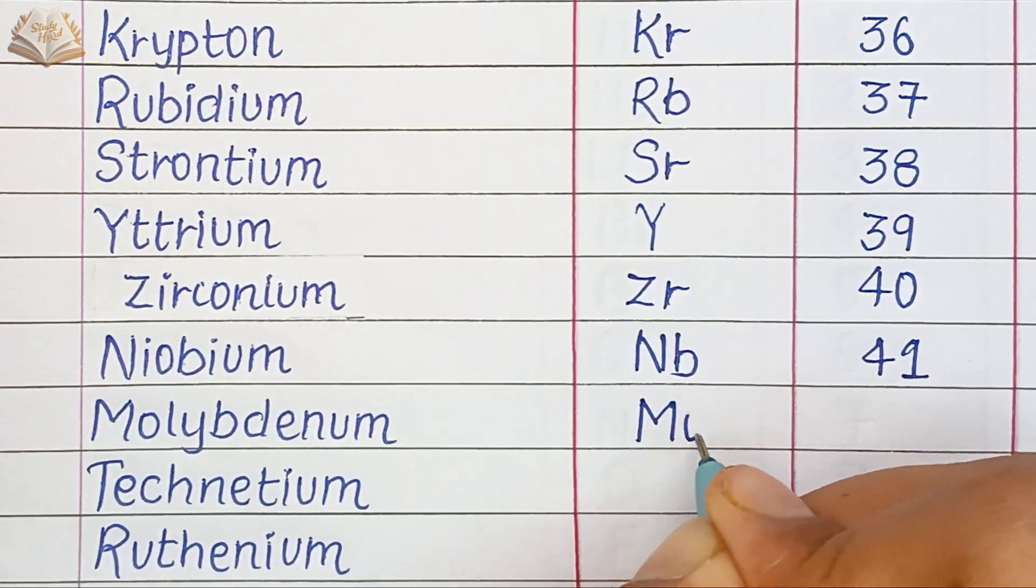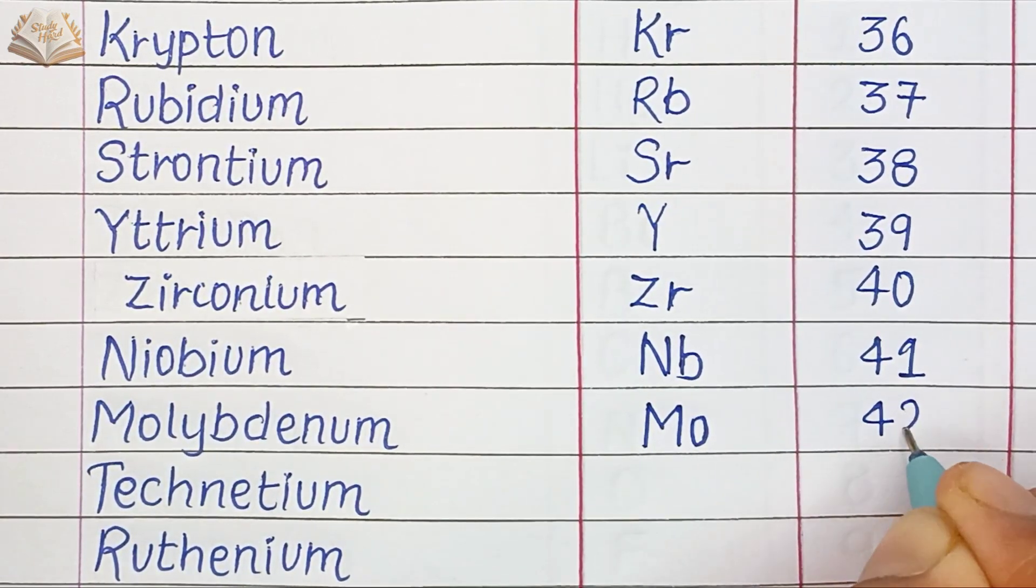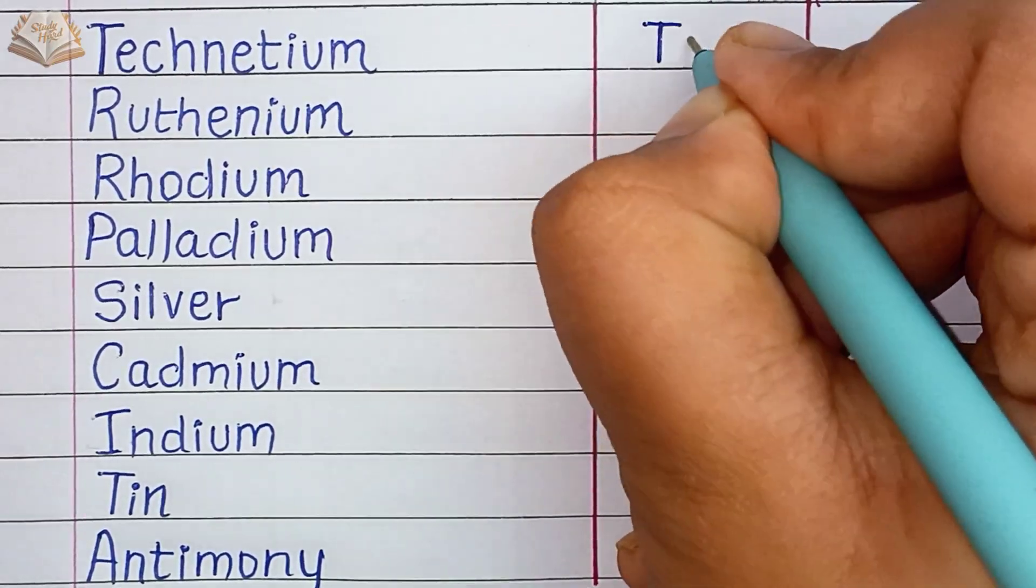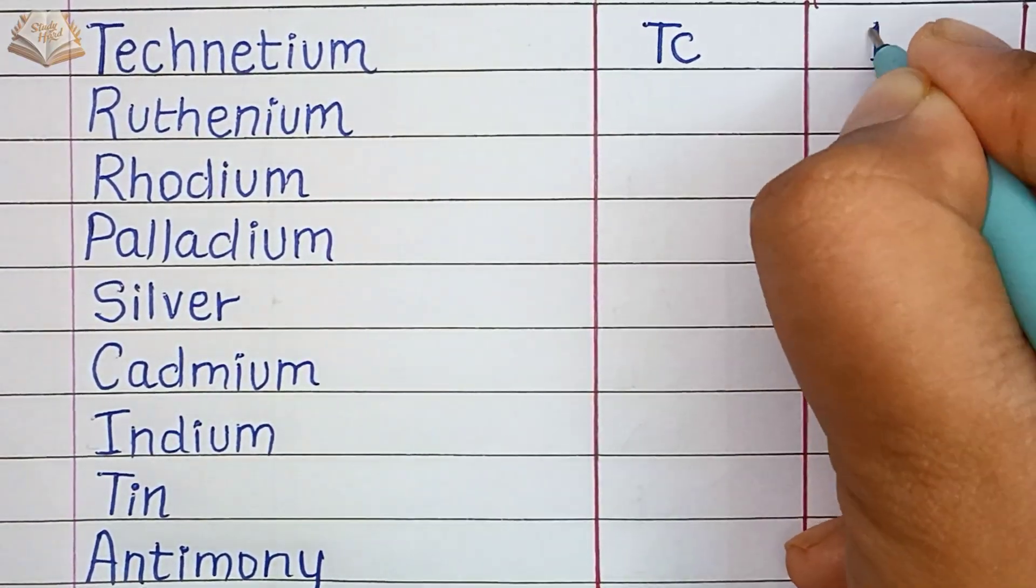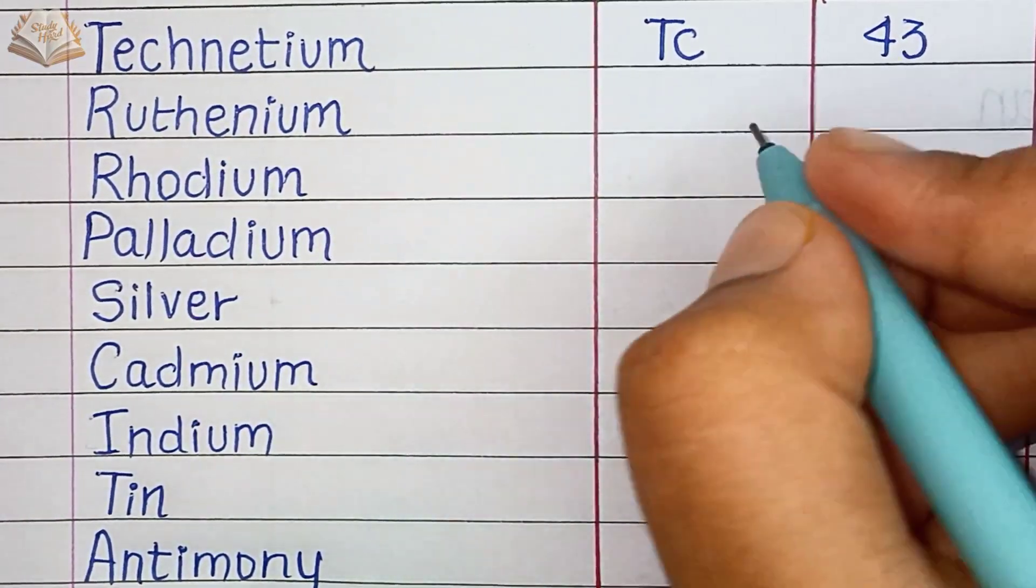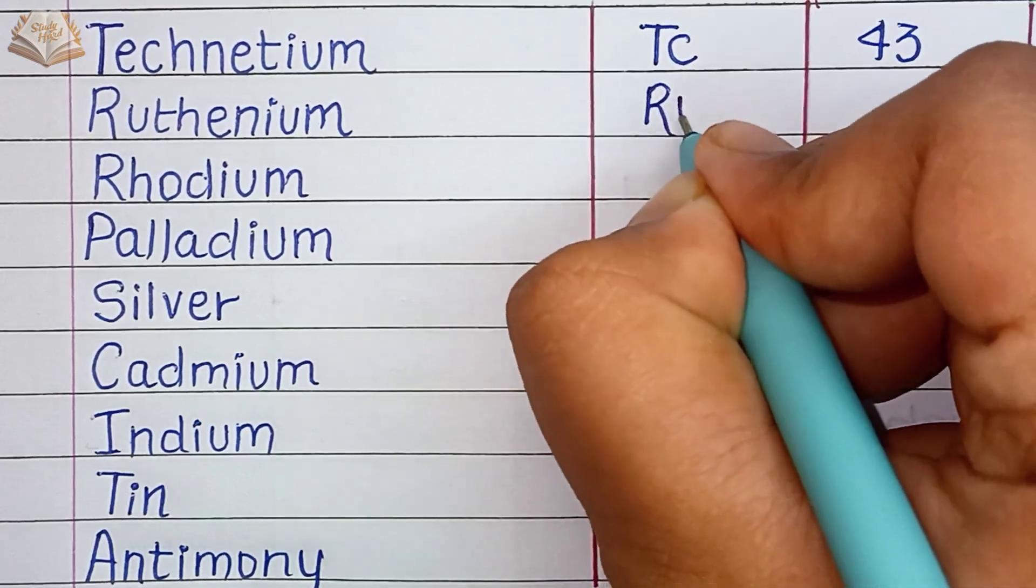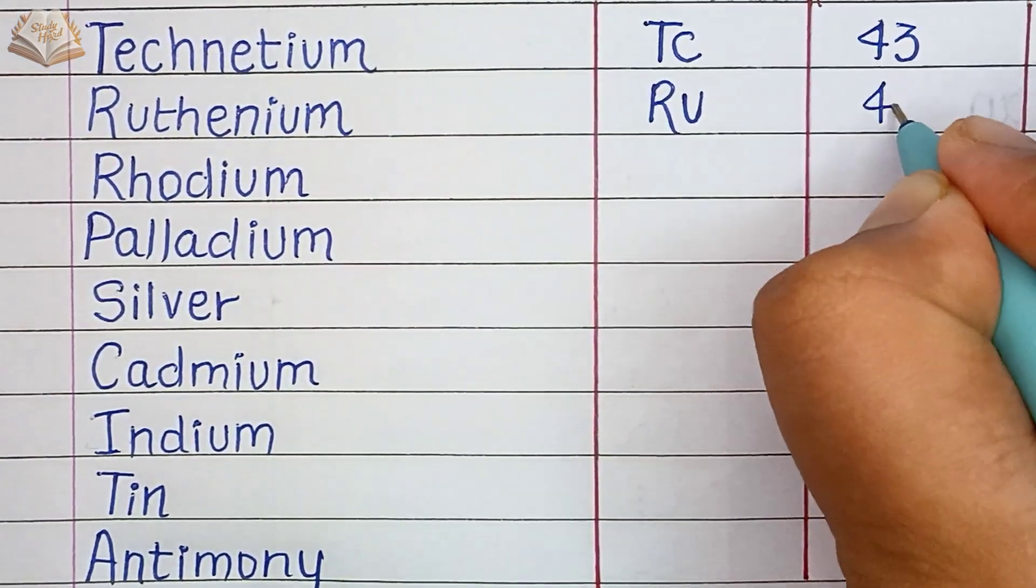Molybdenum, MO, atomic number 42. Technetium, TC, atomic number 43. Ruthenium, RU, atomic number 44.